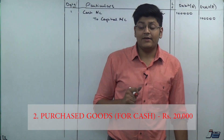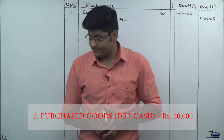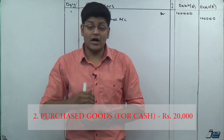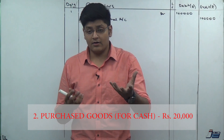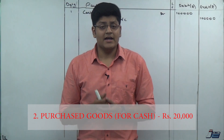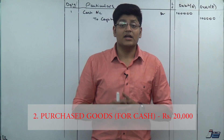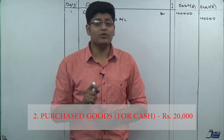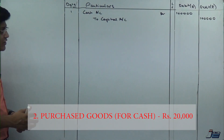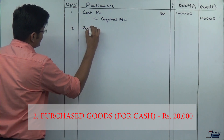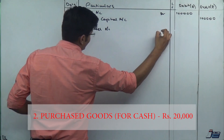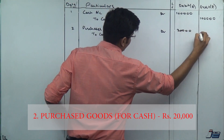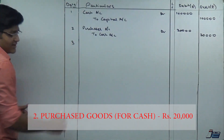Entry number two: purchased goods for cash, rupees 20,000. When the medium of payment is not mentioned and neither is the name of the buyer or seller, we consider it to be a cash transaction. Goods are coming in under the name of purchases, so Purchases Account is debited. What is going out? Cash. So: Purchases Account debit to Cash Account, amount 20,000.